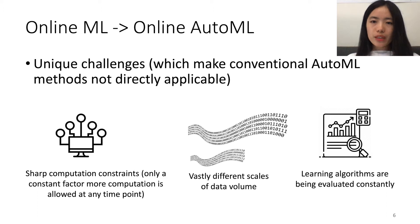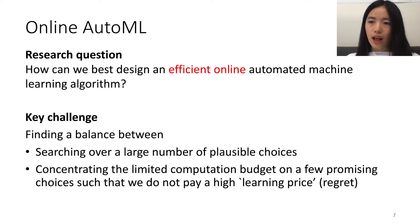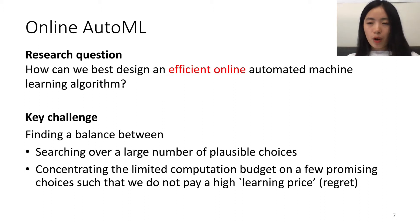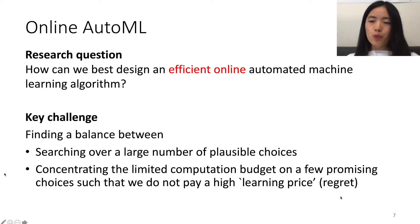With these unique constraints, the main research question is: how can we best design an efficient Online AutoML solution, which can find a balance between searching over a large number of possible choices such that we are able to navigate a good one, and concentrating the limited computation budget on a few promising choices, such that we do not pay a high learning price?